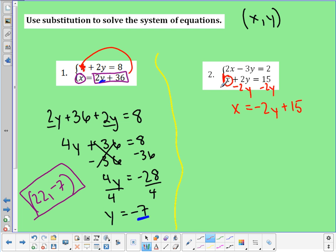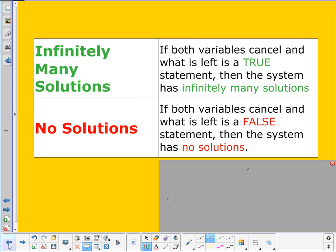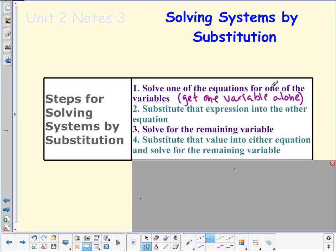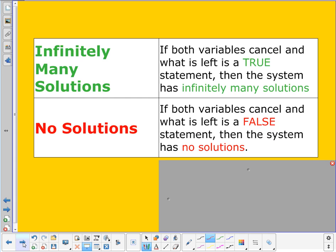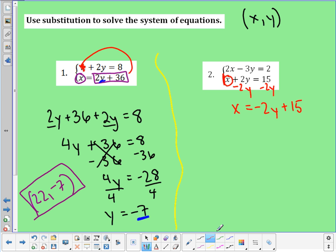Now that I have an equation by itself. That was that step 1 in our step-by-step process. Solve one of the equations for one of the variables. Get one variable alone. I have a variable alone now. I have x. So, now I need to take the piece that's equal to x. Which is this whole piece right here. And I'm going to plug it in for x right there. I take this whole phrase and it goes right there. Here's what that looks like.